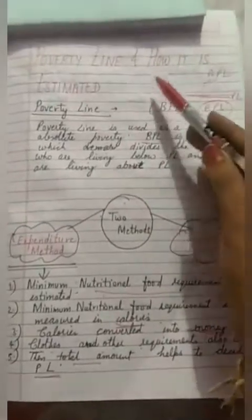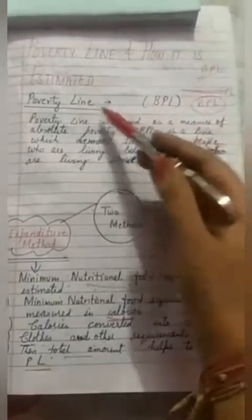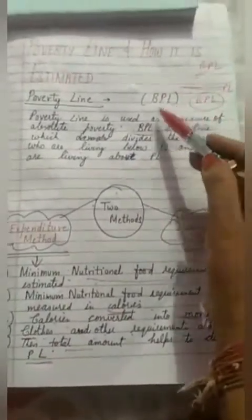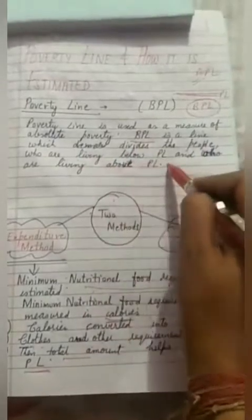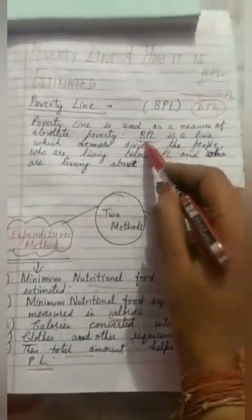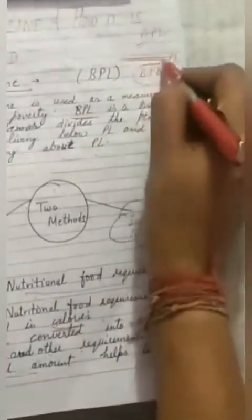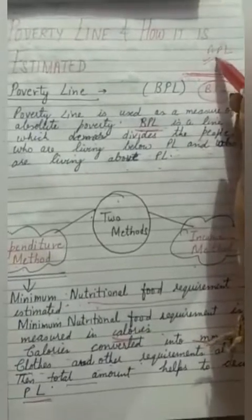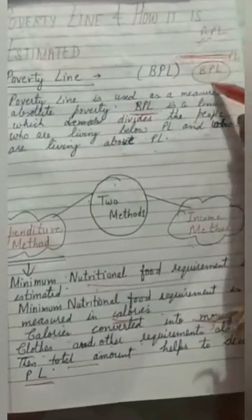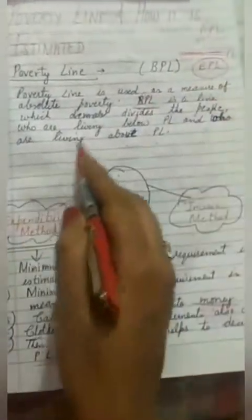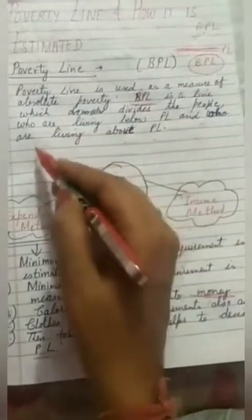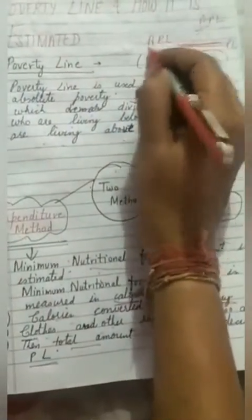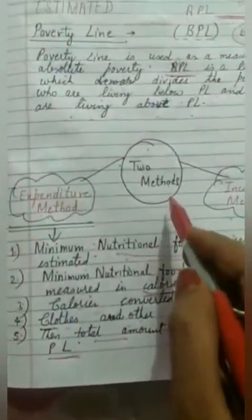Our next topic is poverty line and how it is estimated. Poverty line is a benchmark — a line which tells us who is living below the poverty line and who is living above the poverty line. BPL means Below Poverty Line, APL means Above Poverty Line. There are two methods by which we can decide the poverty line: expenditure method and income method.